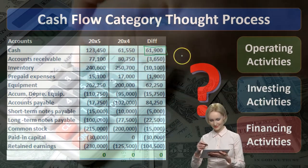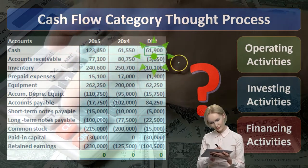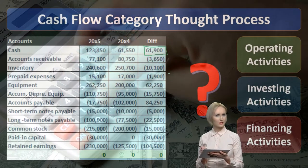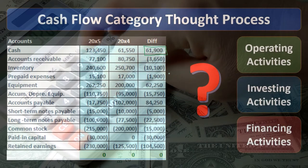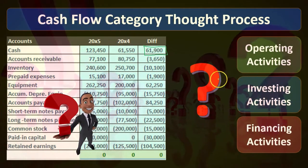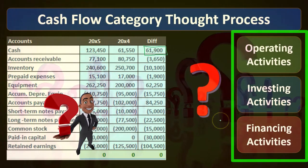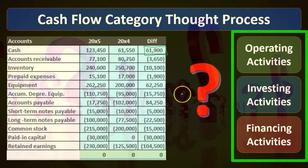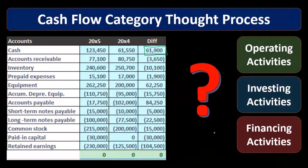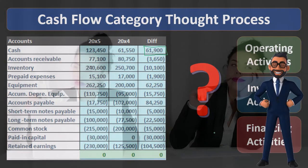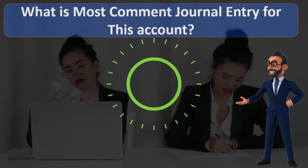What we need to do is take a look at the changes in receivables, changes in inventory, changes in prepaid expenses, and try to determine where each change belongs. Is the change in inventory an operating, investing, or financing activity? Is the change in long-term notes payable an operating, investing, or financing activity? Our goal is to go through a thought process to think through more clearly which category each item belongs to.